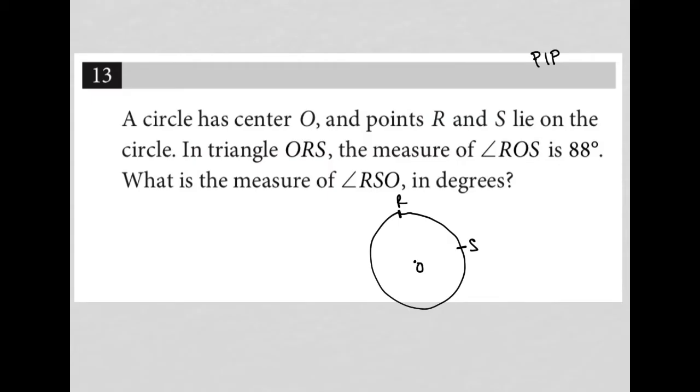The next sentence says in triangle ORS, I'm going to draw my triangle. So O to R to S, connect that. Now, what do I know about this triangle that I've drawn? Well, I know that these two line segments are the same because they're both radii. They're both coming from the center of the circle to the edge of the circle.